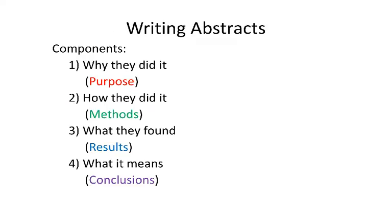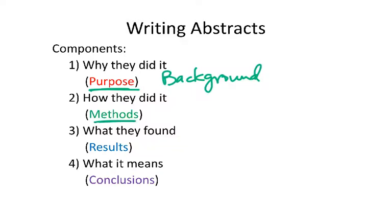The components include the purpose of the paper — why the authors did what they did — which usually also includes a bit of background to set the stage and explain why what you're doing is important. Next, an abstract includes a brief description of how you did what you did: the overall summary of your methods. Then you're talking about what was found — a general summary of the results — and then what it means: the conclusions.